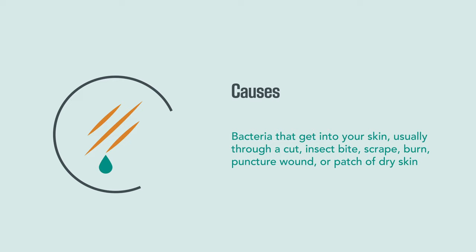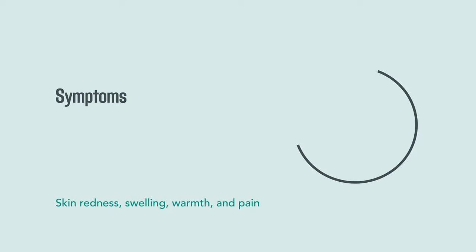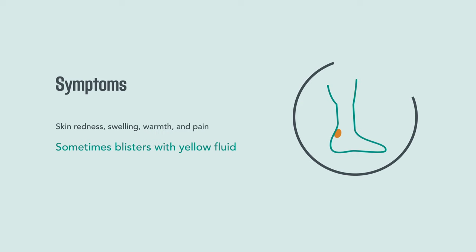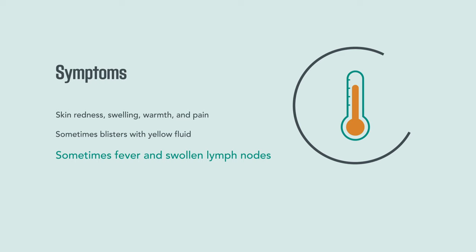Symptoms of cellulitis include skin redness, swelling, warmth, pain, and sometimes blisters with yellow fluid. You can also sometimes experience fever and swollen lymph nodes.